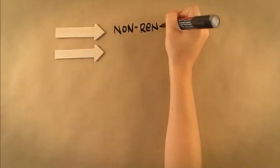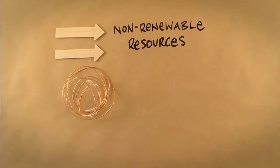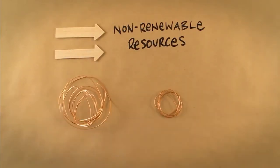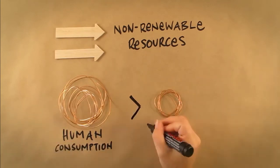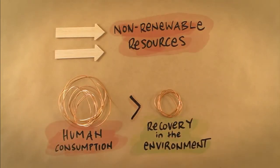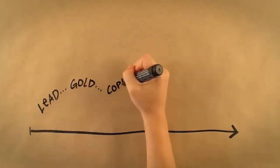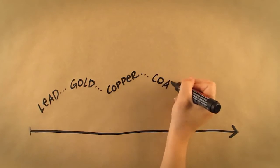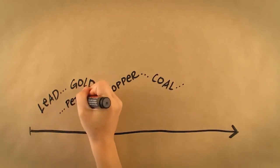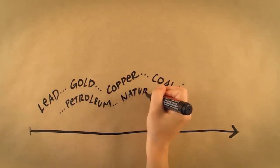Non-renewable resources, however, are those that cannot be replenished in our lifetime. More specifically, it's when human consumption is greater than the rate at which the resource can recover or renew within the environment. Minerals such as lead, gold and copper, fossil fuels such as coal and crude oil, otherwise known as petroleum, and natural gas are all non-renewable resources, as they generally take millions of years to form.